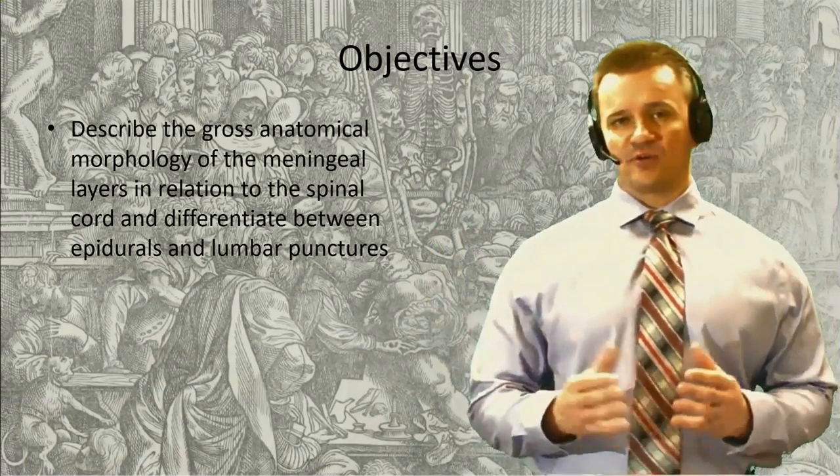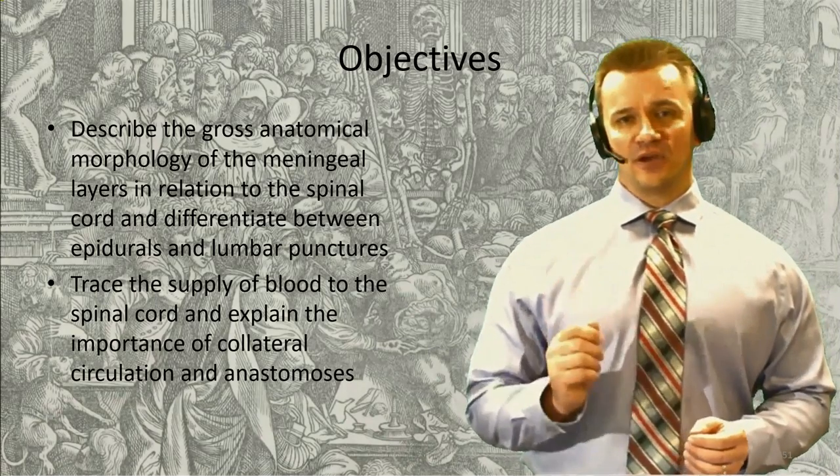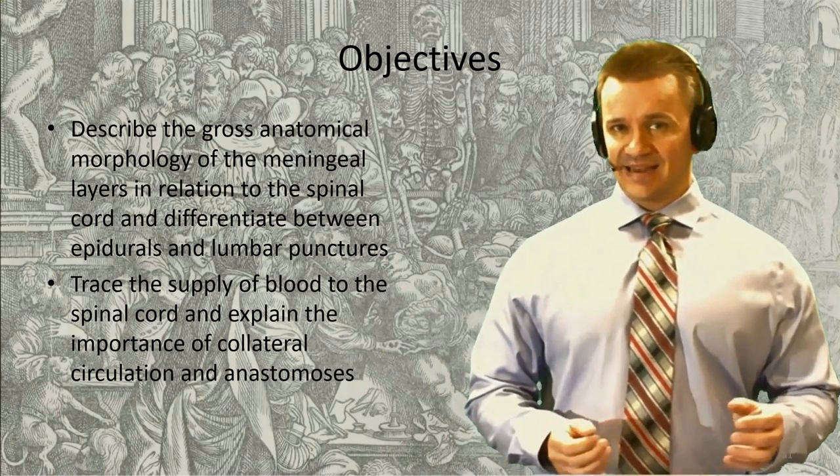Welcome back to the final session for today's lesson. In the second lecture, we talked about the protection afforded to the spinal cord by the vertebral column — that's only half the story. Think about any time you've purchased something fragile, especially online. It comes in a box, but inside the box the item is surrounded with styrofoam or bubble wrap. Same thing is seen with the spinal cord. The role of the spinal meninges is to provide that inner wrapping. Our objectives are to describe the morphology of the meningeal layers, the vascular supply to the spinal cord, and collateral circulation.